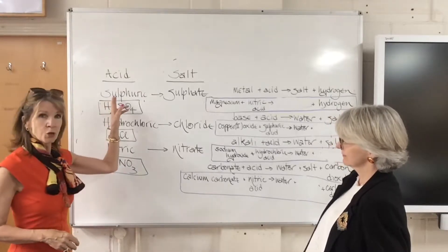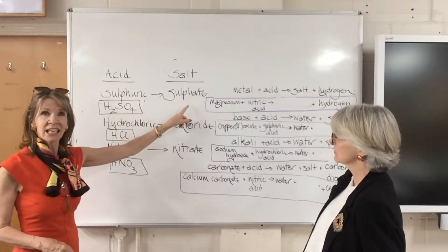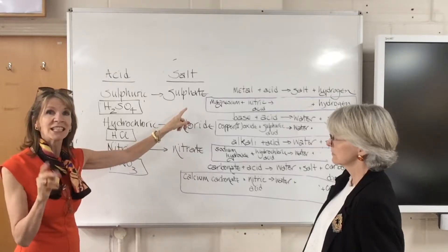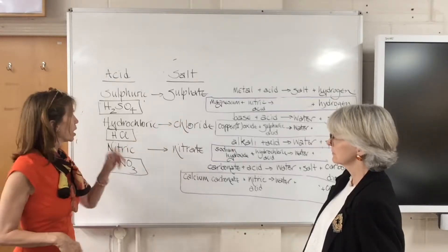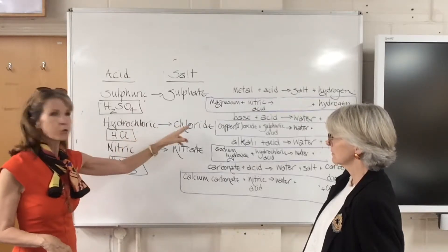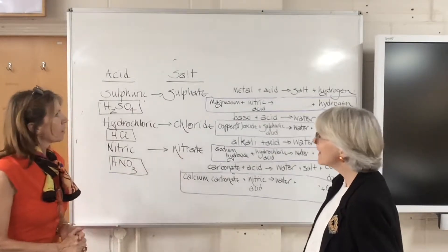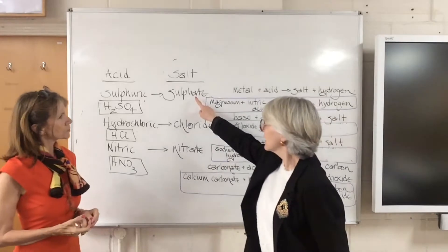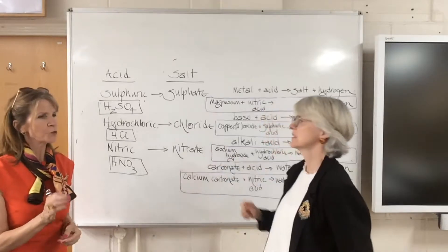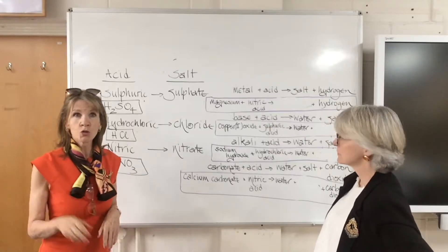Sulfuric acid has oxygen in it, which means the salt must end in '-ate' — it means it contains oxygen. Hydrochloric acid has no oxygen in its formula, so it's chloride. Nitric acid has oxygen, so it's nitrate. It's very easy to get the endings wrong, so you must get them right. Knowing the formula makes it so much easier.